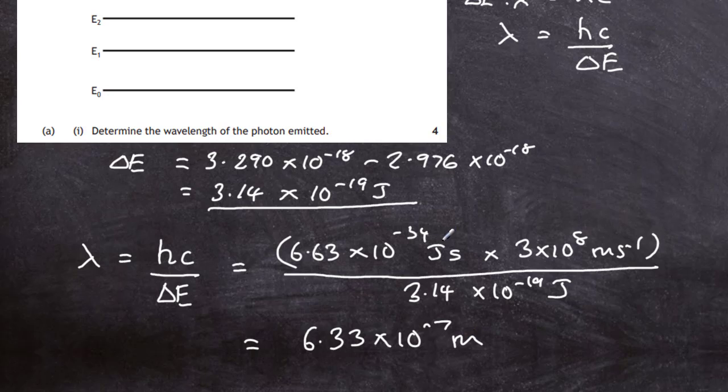Doing that in the calculator, we end up with 6.33 times 10 to the minus 7 of a meter. You can check units here because the joules cancel out, the seconds cancel out, and you're left with just a meter. That will be the wavelength of the photon emitted from that transition. We can show off and put it in nanometers: 633 nanometers.